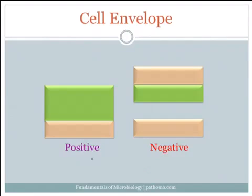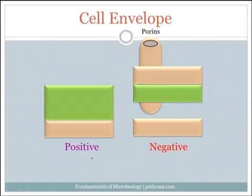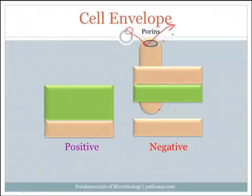Let's talk about some unique features of gram-negative cell envelopes. First, they have things called porins, which are cylindrical tube-like structures that connect the outside environment to the periplasm. This is important because antibiotics, in order to work, have to travel through the porins. However, gram-negative bacteria can actually change the composition of the porins so that antibiotics cannot make it through and cannot be effective in killing gram-negative bacteria.